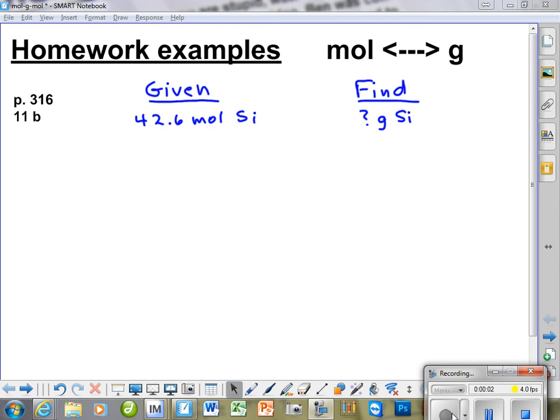Here's a homework problem, an example of a homework problem that will give you how to change moles to grams. We always start out exactly the same way. We have our given over 1. So we put the 42.6 moles of silicon over 1.